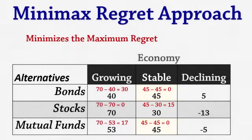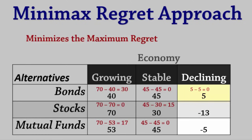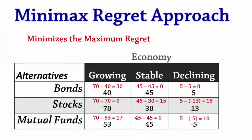For a declining economy, the best payoff is 5. If we invested in bonds, there is no regret. If we invested in stocks, the regret is 5 minus negative 13, which is 18. If we invested in mutual funds, the regret is 5 minus negative 5, which is 10.